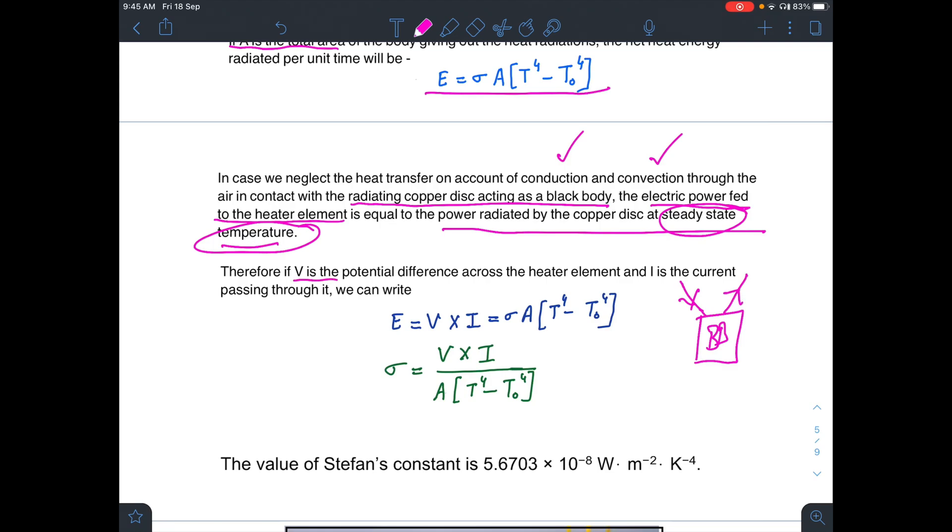Therefore, if V is the potential difference across the heater element and I is the current passing through it, then we can write that E equals V times I and this will equal sigma A times T to the power 4 minus T0 to the power 4. Therefore, you can calculate the value of Stefan's constant sigma from this relation.